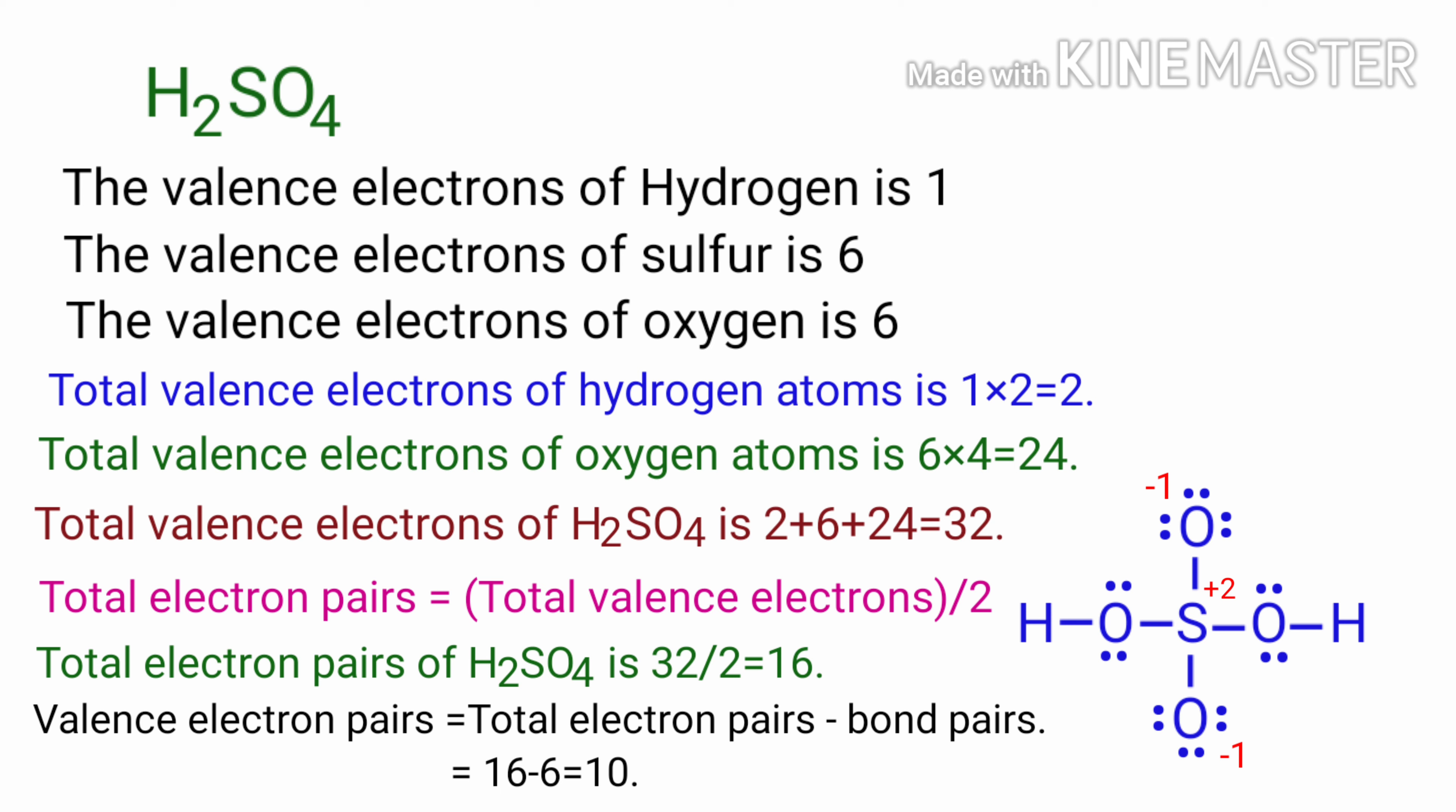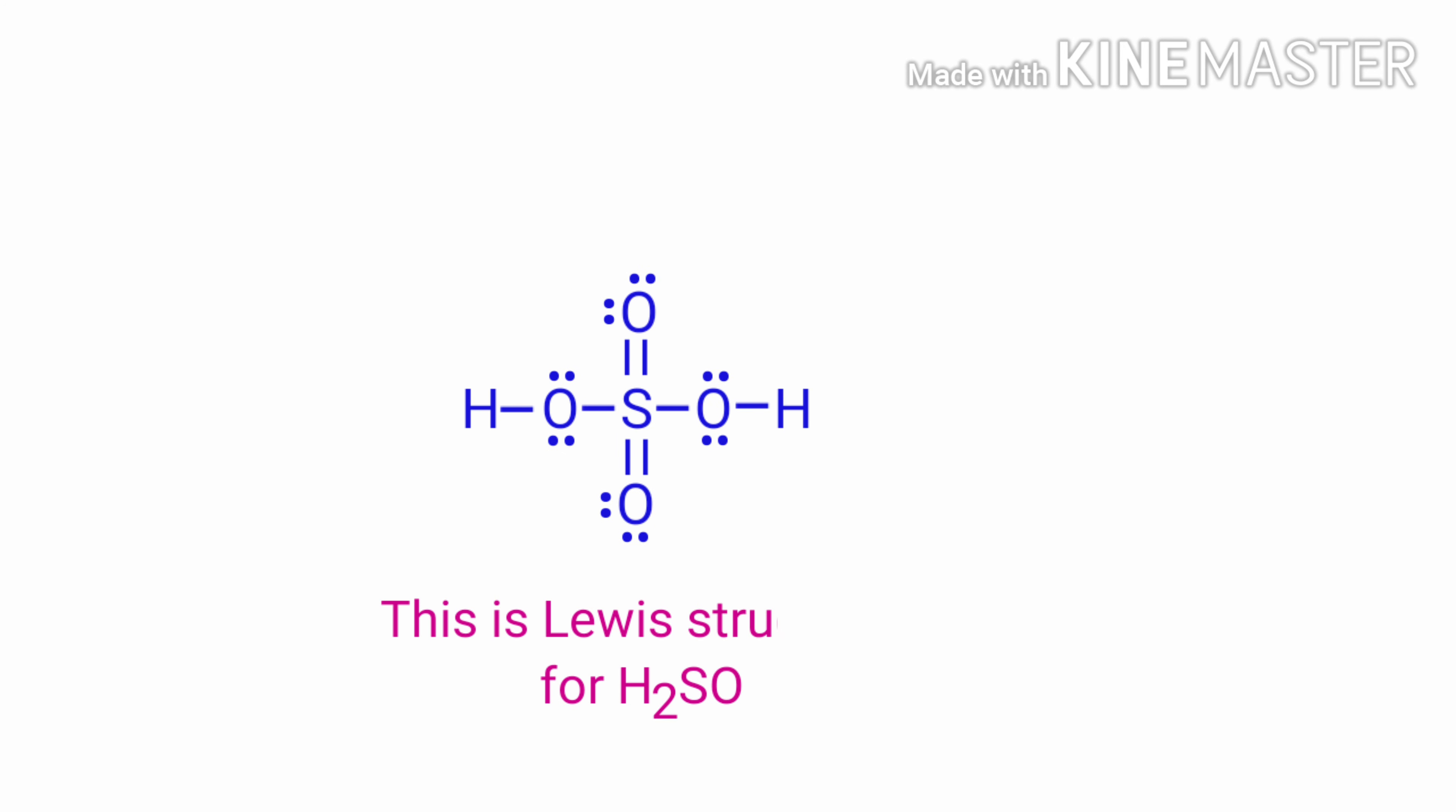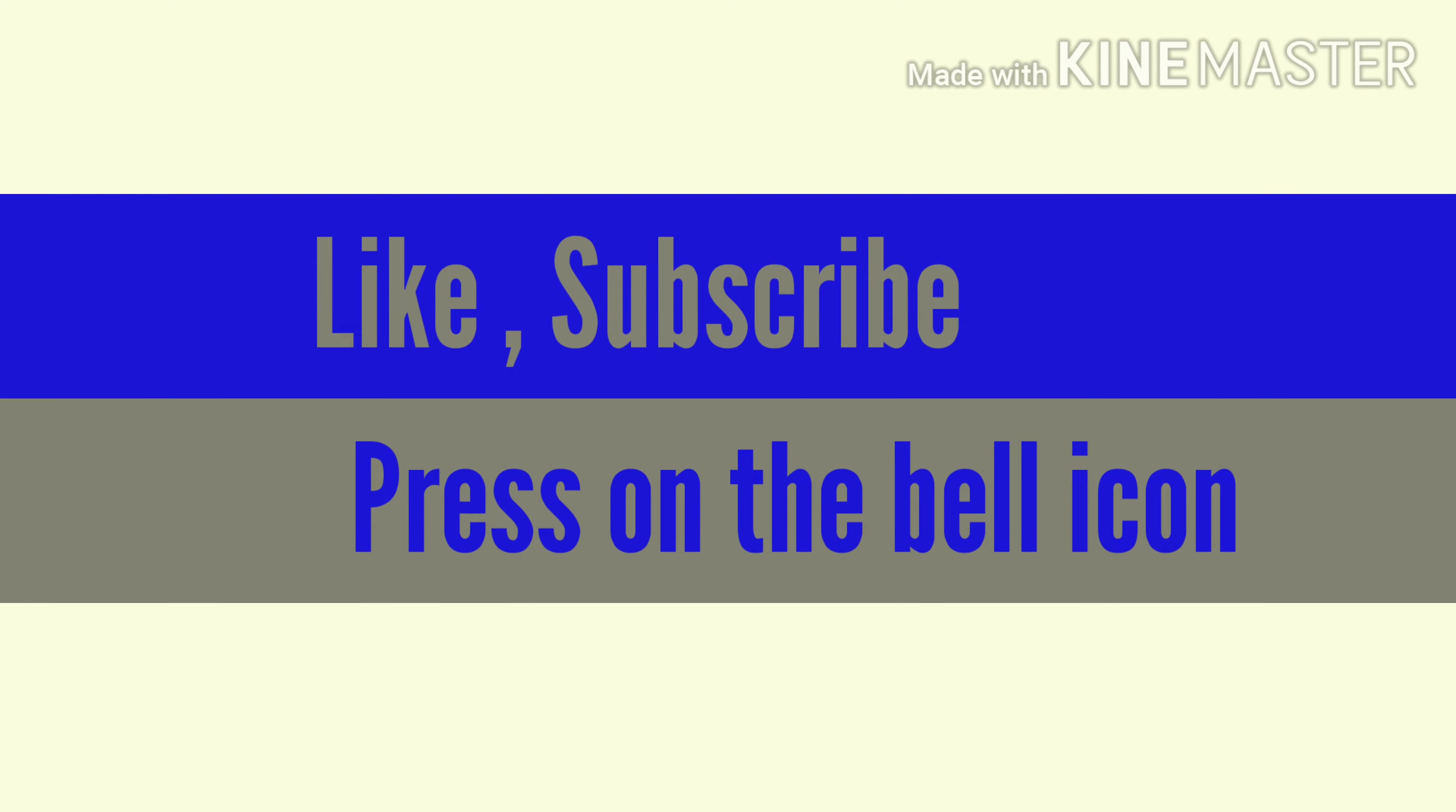Sulfuric acid is a neutral molecule and overall charge should be zero. You should know sulfur can keep more than eight electrons in its outer shell. So now we should try to minimize charges by converting lone pairs to bonds between sulfur and oxygen atoms. This is the Lewis structure for H2SO4. If you like this video, please subscribe my channel and press on the bell icon.